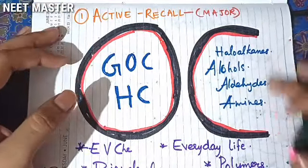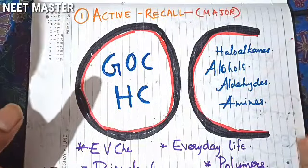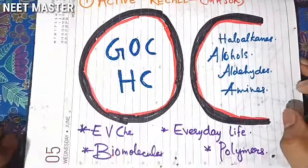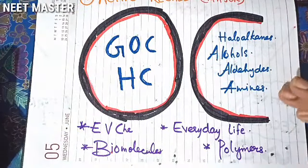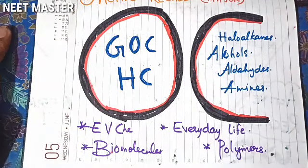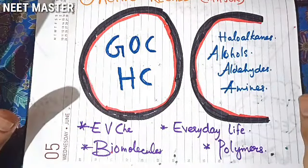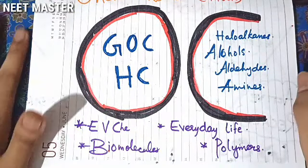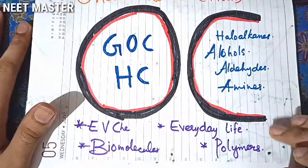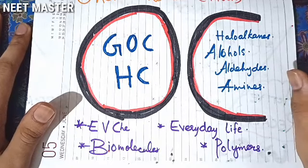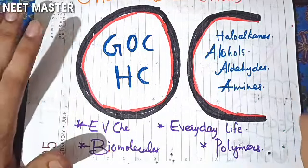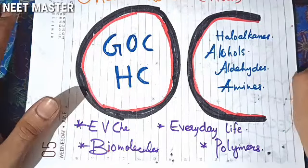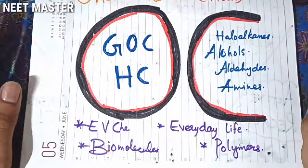This is the first chapter. The chapters also include Environmental Chemistry, Chemistry in Everyday Life, Biomolecules, and Polymers. We will learn about Organic Chemistry, Environmental Chemistry, Biomolecules, and Chemistry in Everyday Life. How do we learn how to do it when we study organic?